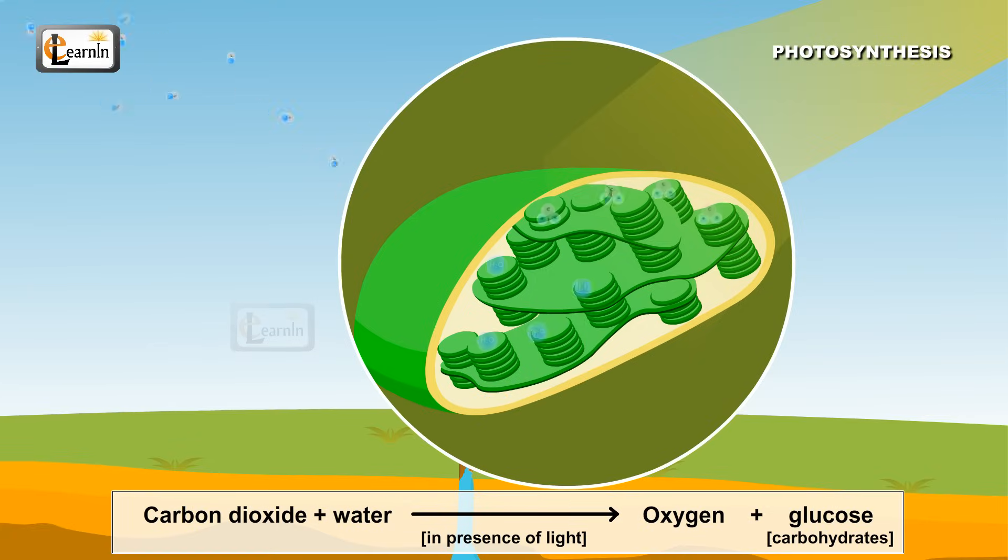The products formed are glucose and oxygen. Carbohydrates, which are a form of glucose, are synthesized from carbon dioxide and water.